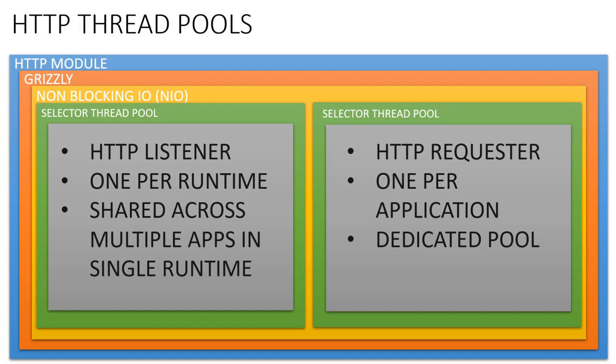Unlike the other three thread pools which are created at runtime startup, the HTTP selector thread pools are not created at startup but when the application is deployed — and only if the application has the HTTP module. They depend on the HTTP module to create these two different thread pools. Since the HTTP module uses Grizzly, Grizzly needs NIO, and NIO depends on selector thread pools.